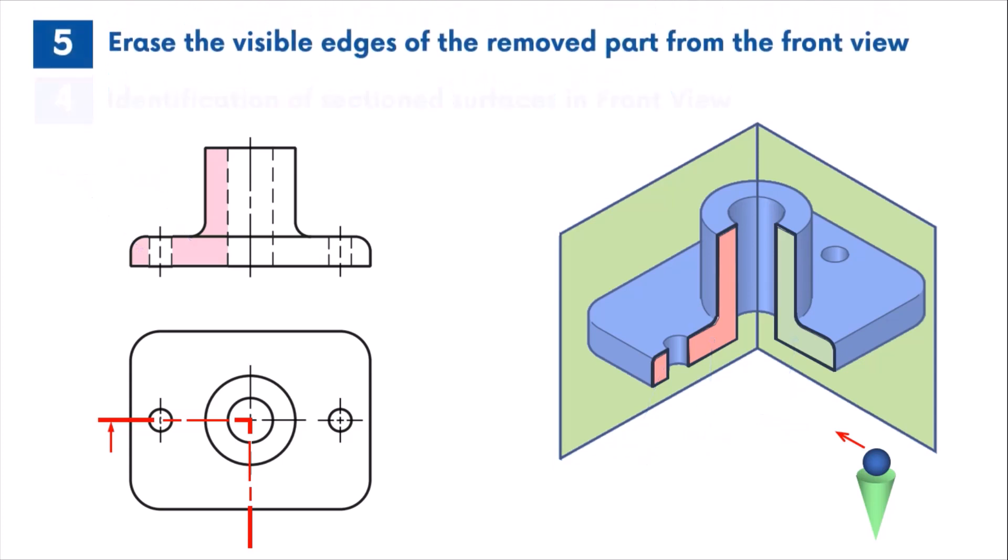In the next step, the visible edges of the removed portion will be erased from the section part in the front view.